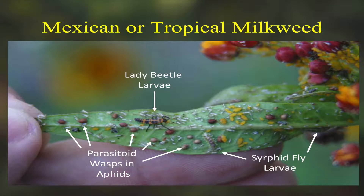One of my favorite plants for beneficials is the tropical milkweed or Mexican milkweed. There are issues with it for butterflies — we need to cut it to the ground in winter and let it come back. But look at this leaf: there are yellow aphids, a lady beetle larva, every brown aphid has a wasp inside, and there are even two syrphid fly larvae on that leaf. That leaf is a nursery for beneficial insects.